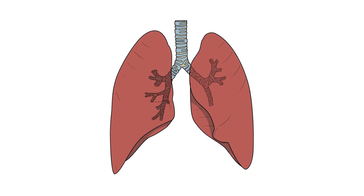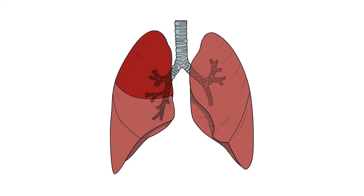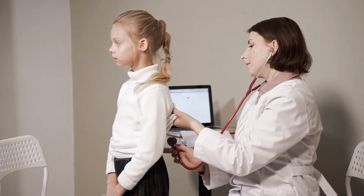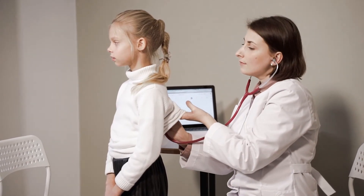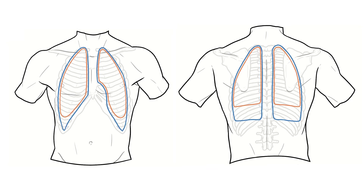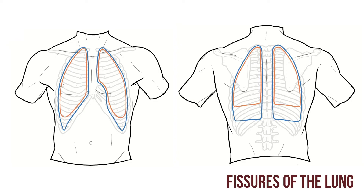Now each of these lungs isn't a single block of tissue. Instead they're divided into sections known as lobes. These lobes can function semi-independently, and a problem in one may not impact any of the others. So when examining the chest it's vital to listen to each of them to not just identify the presence of a problem, but also its location. In order to find the lobes we need to locate the boundaries that separate them — the fissures of the lung.